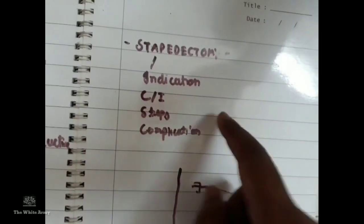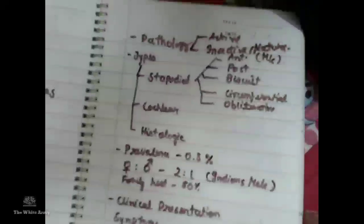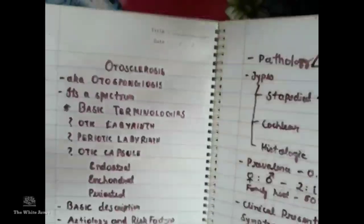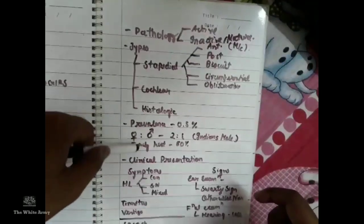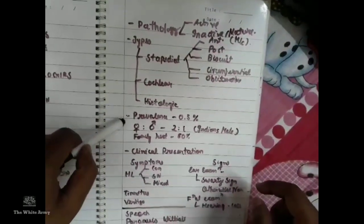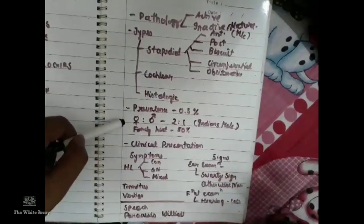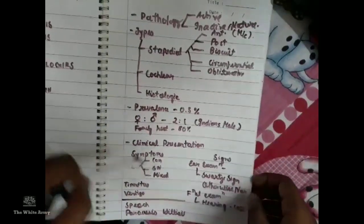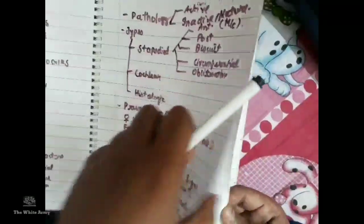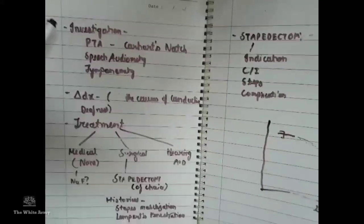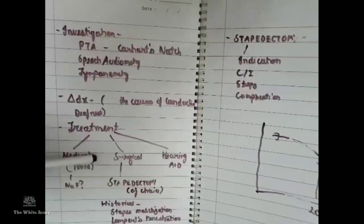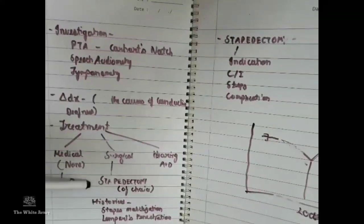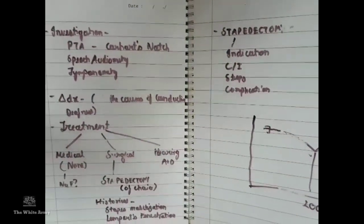To summarize, we have discussed otosclerosis covering: basic terminologies and definitions, etiology and risk factors, pathology (active and inactive types), histology, numerical data, prevalence, sexual predisposition, family history, clinical presentation (signs and symptoms), investigations, differential diagnosis, and treatment divided into medical, surgical, and hearing aid — of which surgical — specifically stapedectomy or stapedotomy — is the treatment of choice.